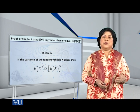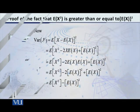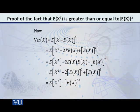So how do we prove this? Let us start from the variance. Because we have said that the variance exists, let us start from the variance. What is the basic definition of the variance? The variance of X is given by the expected value of X minus mu, whole square.